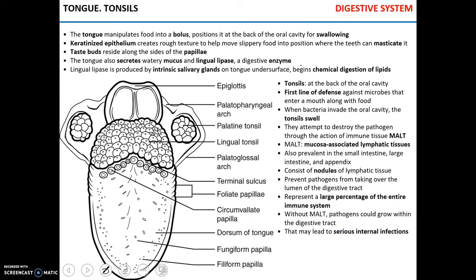The function of the tongue is to manipulate food into a bolus so that it will be easier to swallow. The tongue is covered with keratinized stratified squamous epithelium, which forms a rough texture that helps the tongue manipulate food into a specific position for the teeth to chew or masticate. On the surface of the tongue there are taste buds, which are essential for sensing taste.